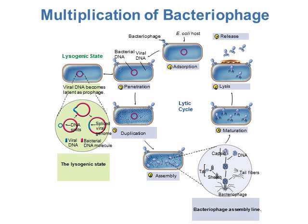Once the viral DNA or RNA penetrates, the bacteriophage can go through the lytic cycle. Starting at the top and going counterclockwise: absorption, penetration where the viral DNA or RNA is injected in, duplication and assembly of all parts, maturation, and then lysis and release at the top. When all these steps happen right away in the bacterial cell, it's called the lytic cycle.